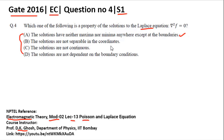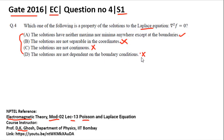Options B, C, and D are wrong properties of the Laplace equation. Option B states solutions are not separable in coordinates — this is wrong because you can solve the Laplace equation using the method of separation of variables. Option C states solutions are not continuous — this is wrong because Laplace equation solutions are continuous. Option D states solutions are not dependent on boundary conditions — this is wrong because the solution depends on boundary conditions. Therefore, option A is the correct answer.